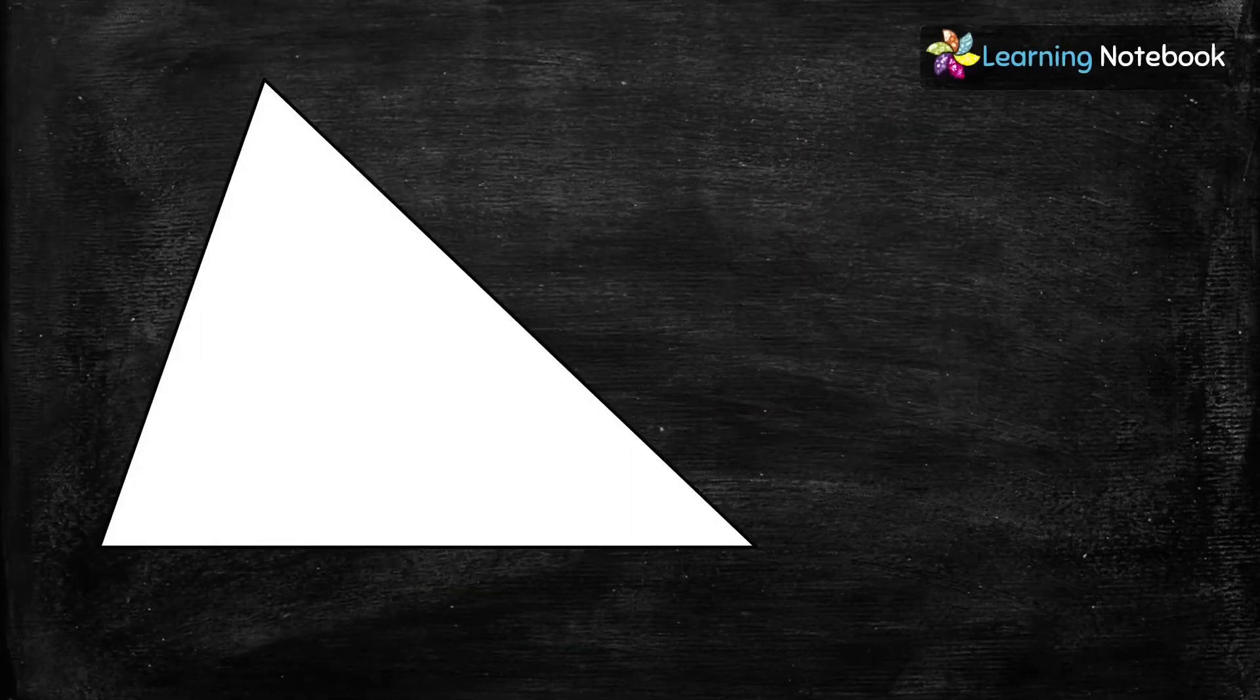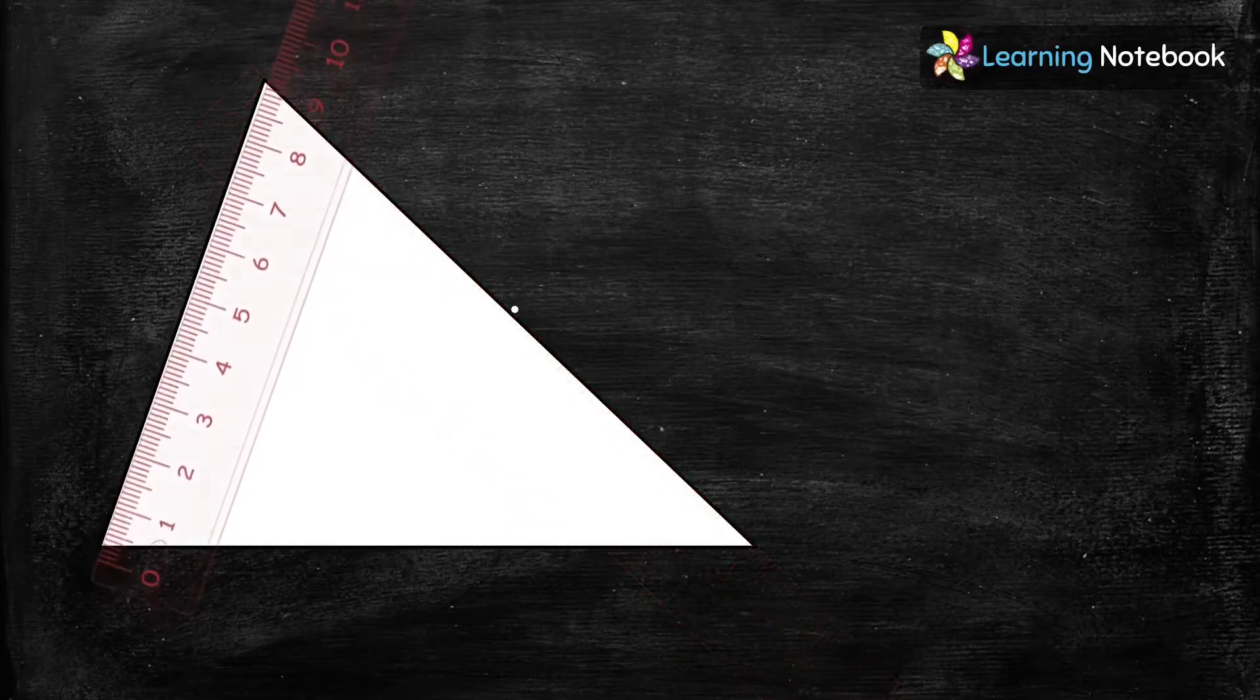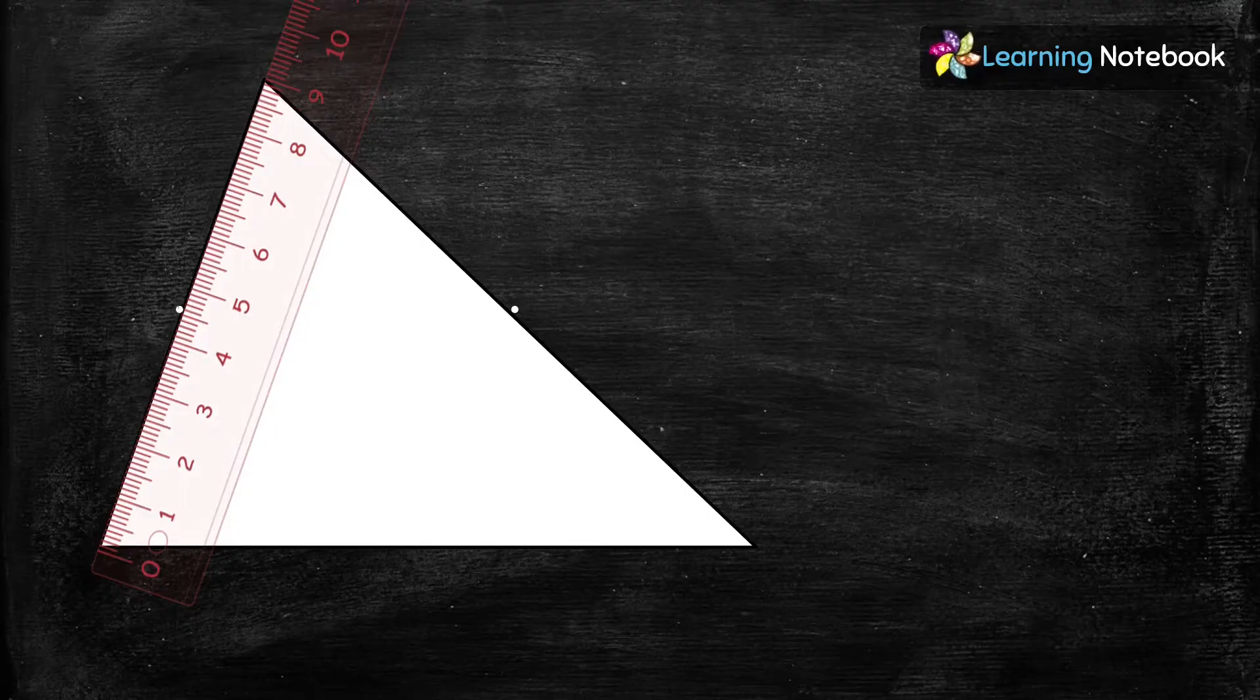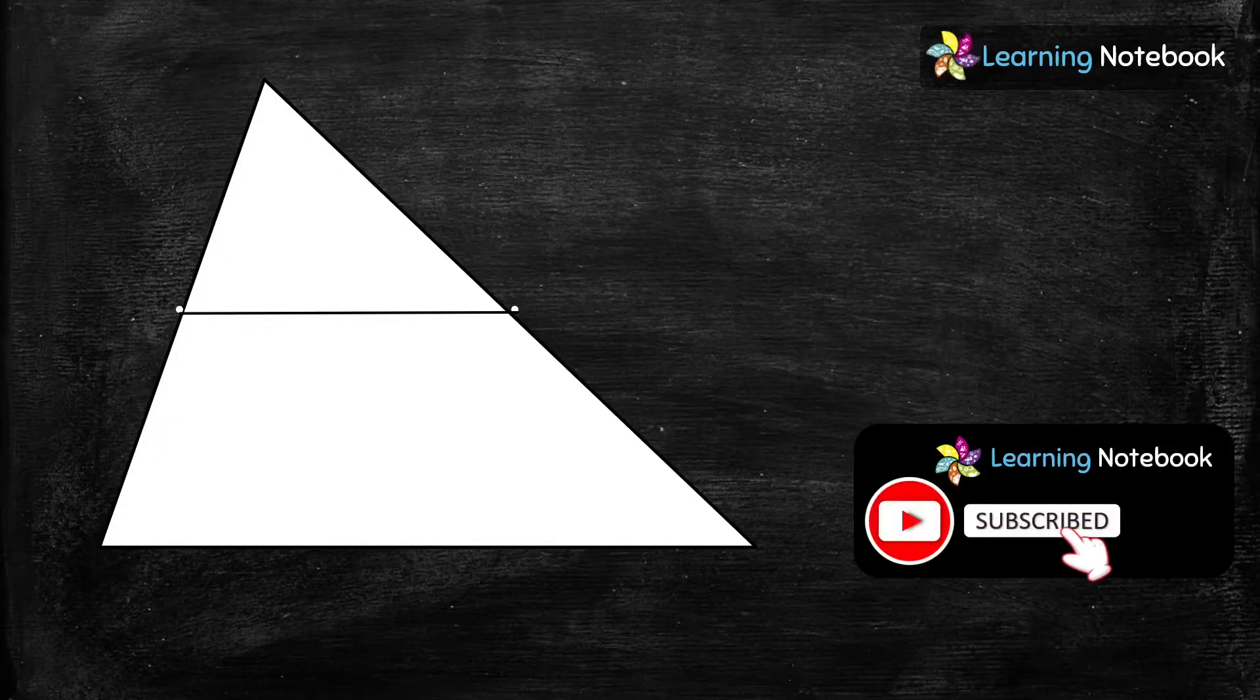In the next step, let's measure the length of two sides of the triangle and find their midpoints, then we will join these midpoints as shown here.